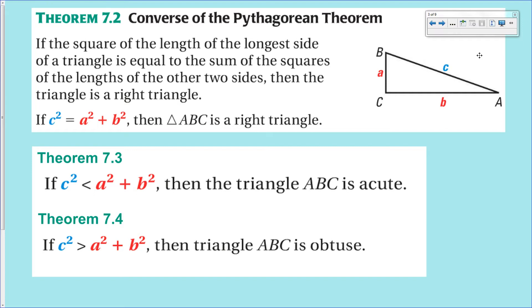And if you find the equation in Theorem 7.2 not to be true, then it's not a right triangle, and then make a determination whether it's less than or greater than the sum of the other two sides squared. If you do that, as long as you put the longest side into c², you should be fine.